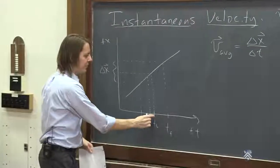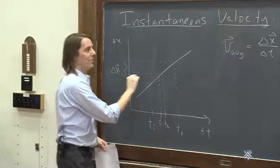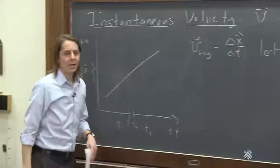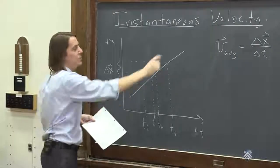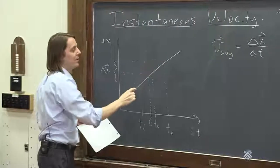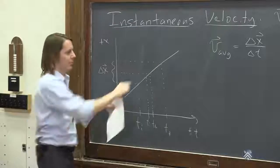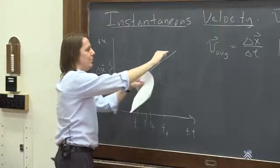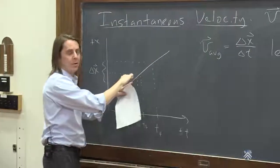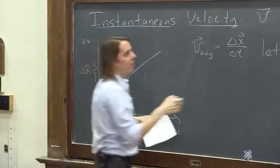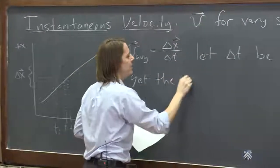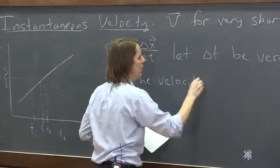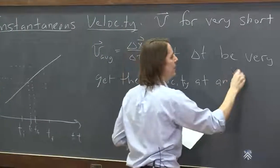And you can see what's going to happen. This got smaller, but this got smaller, right? They both got smaller. The ratio is going to be the same, because it's uniform motion. Any delta T you pick, you're going to get the same average velocity, whether it's big, or down here, or up here, or really small. So if we let it be really small, we'll get the velocity at an instant.